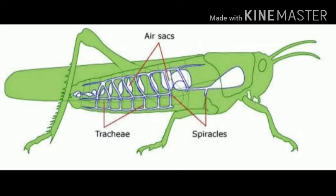The spiracles lead to air tubes which form a fine network that reaches every tissue of the body. Air enters the body through this network. The body tissues absorb oxygen and give out carbon dioxide, which is expelled from the body.